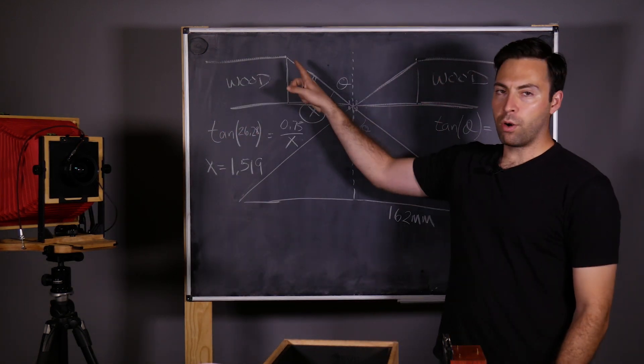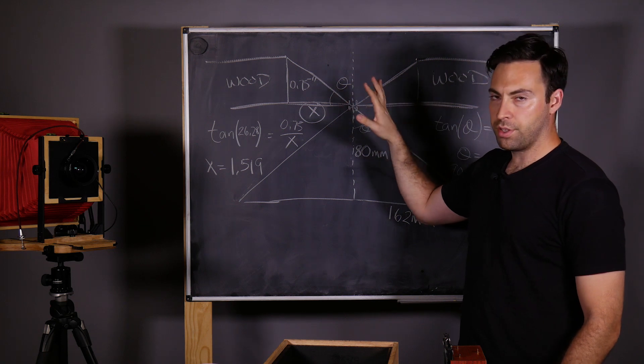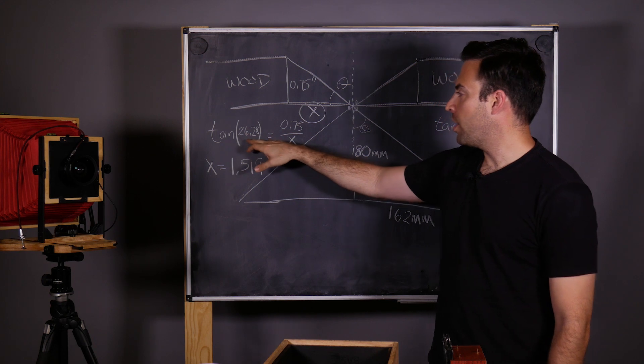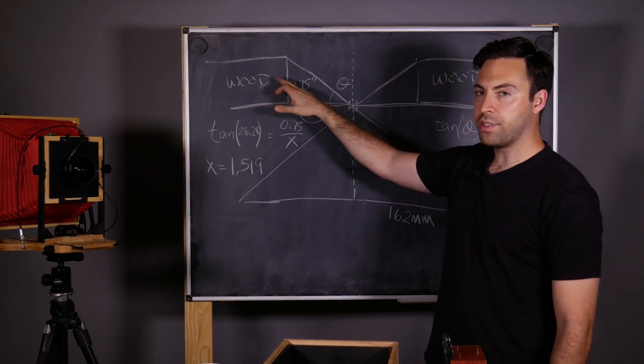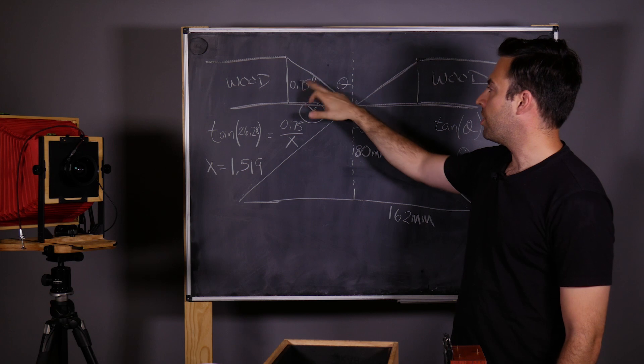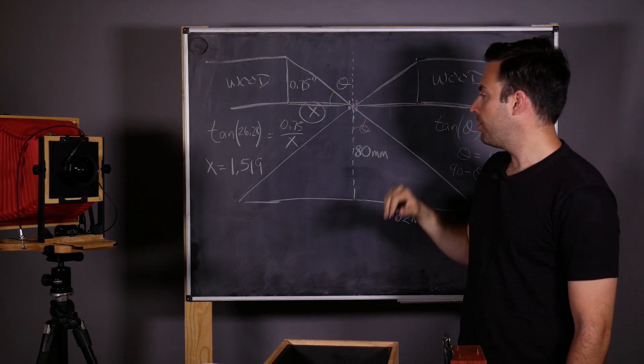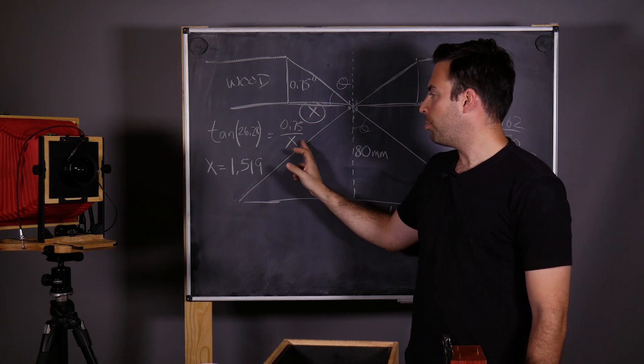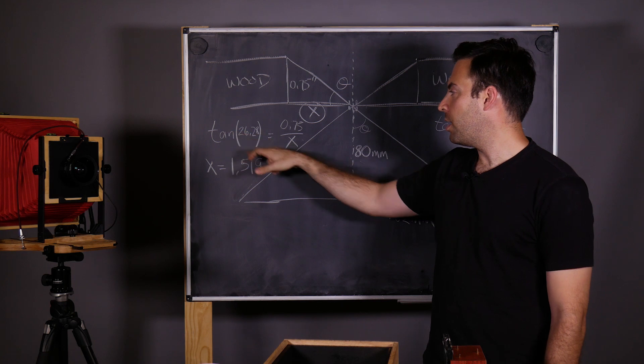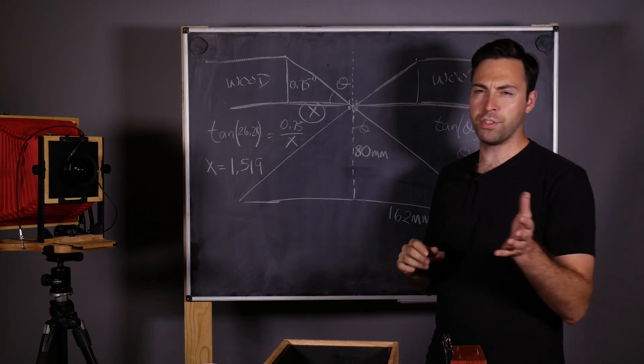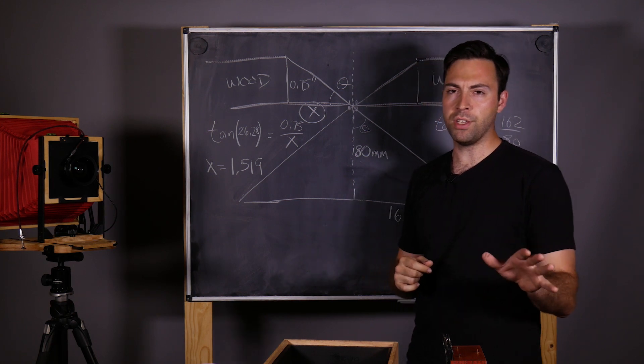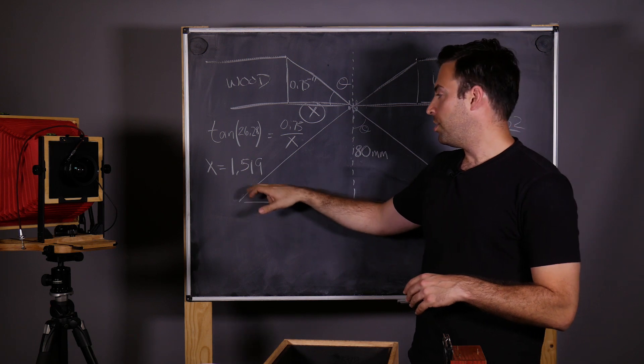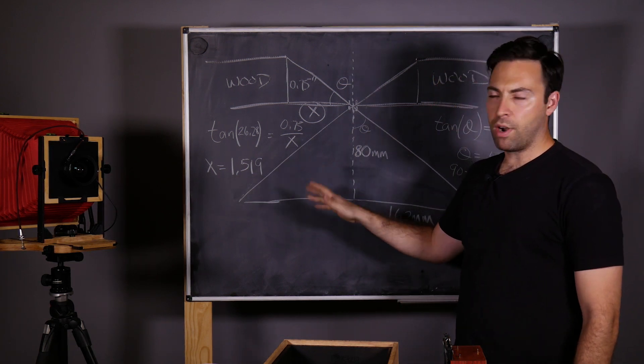And since we know the thickness of our wood is 0.75 inches, we're going to use the same trigonometric property using this angle. So tangent of 26.28 degrees is equal to the opposite side divided by the adjacent side. So the opposite side we know is 0.75 inches. And here we have x, our unknown. So it's 0.75 over x. We just multiply by x, divide by the tangent of 26.28. If you're doing this on your calculator, make sure your calculator is reading in degrees, not in radians. And we get that x. Now because this is inches, this is also inches. So x is going to be 1.519 around there inches.